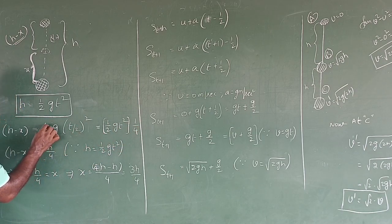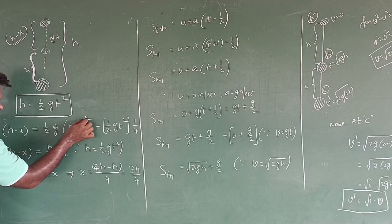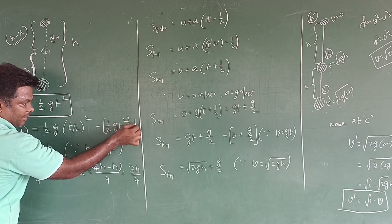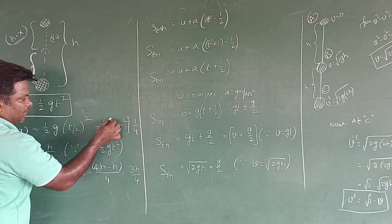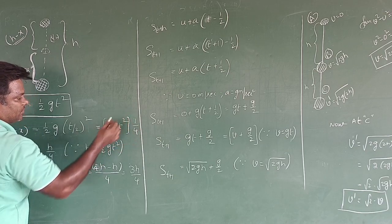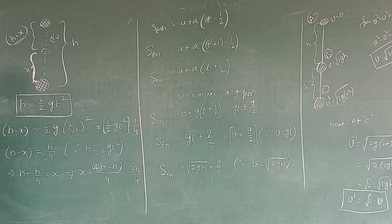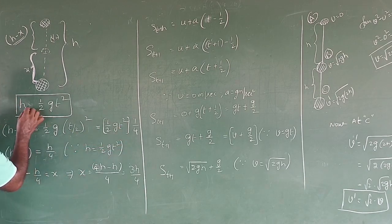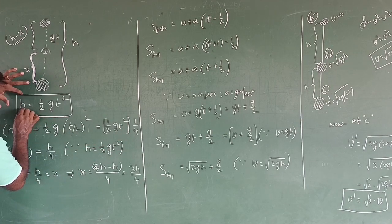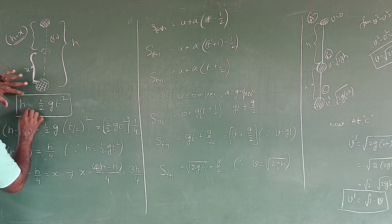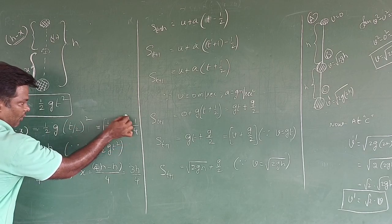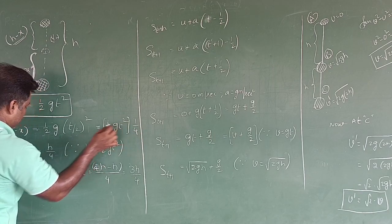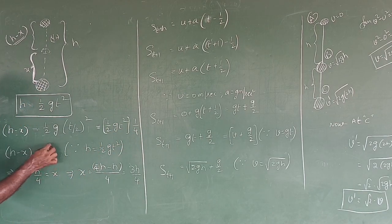That is what is written here: half g into t squared by 2 squared, which I can write as 4. So what you are getting is half gt squared into 1 by 4. What is this half gt squared actually? This half gt squared is equal to h. So I am writing h into 1 by 4, which gives h by 4.